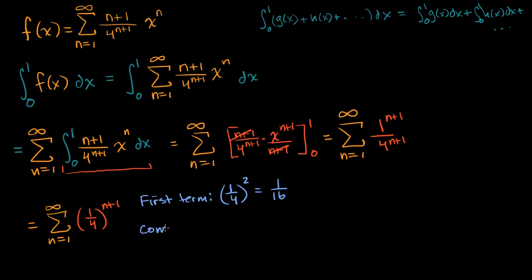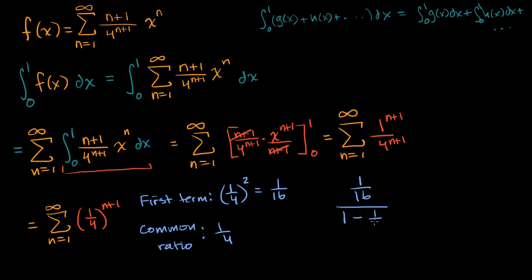Our common ratio is one-fourth, since we keep multiplying by one-fourth each time. For an infinite geometric series, since the absolute value of the common ratio is less than one, we know this converges. It converges to the first term, one over sixteen, divided by one minus the common ratio, one minus one-fourth. That gives us one over sixteen divided by three-fourths, which equals one over sixteen times four over three, giving us one-twelfth.